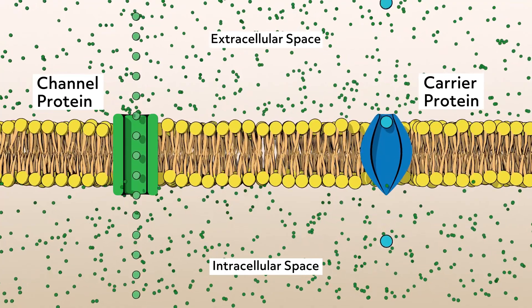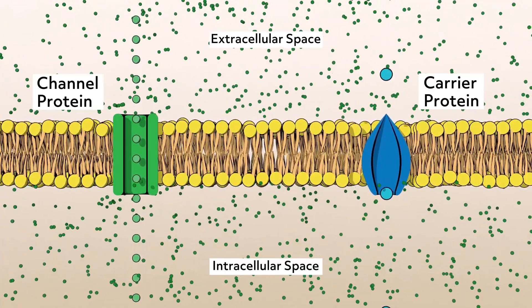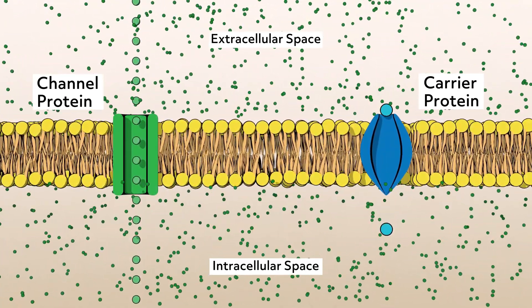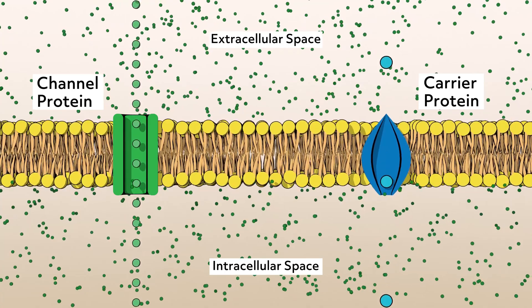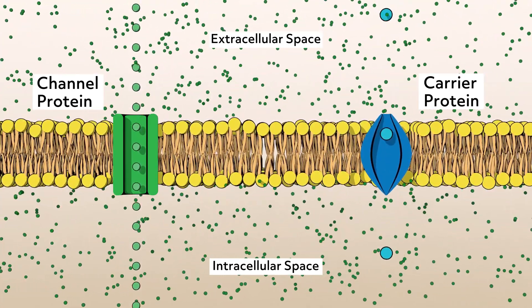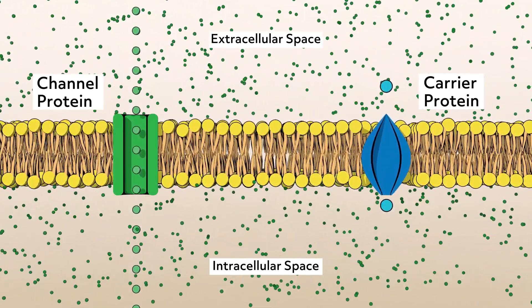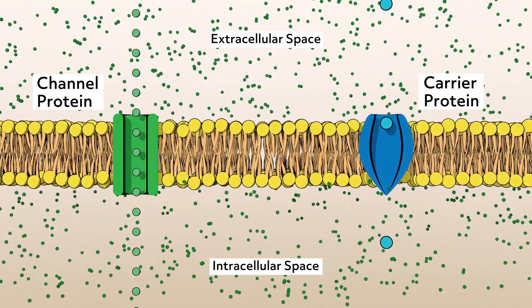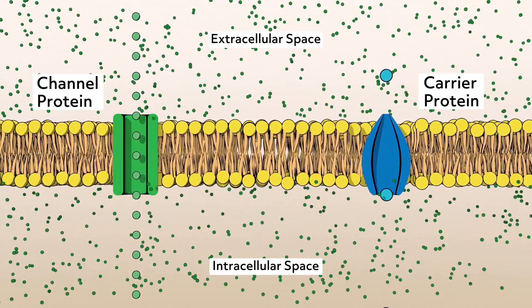There are carrier and channel proteins. Carrier proteins change shape when bound to their target substance, moving them from one side of the cell to the other. Channel proteins create a molecular tunnel through the membrane.